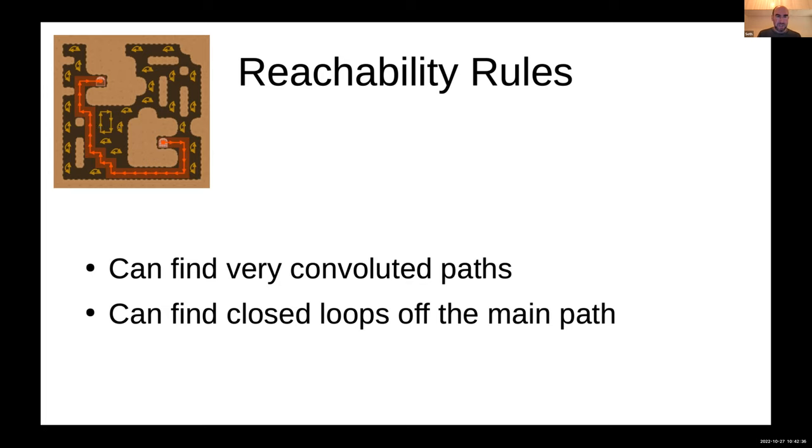One of the things you'll see in the examples is that it can find very convoluted paths. It doesn't care about finding a short path, it only cares that there is a path. It can also find these little closed loops that are basically off the path because every point on this path is reachable from every other point, but they don't interfere with the actual path from the start to the goal.